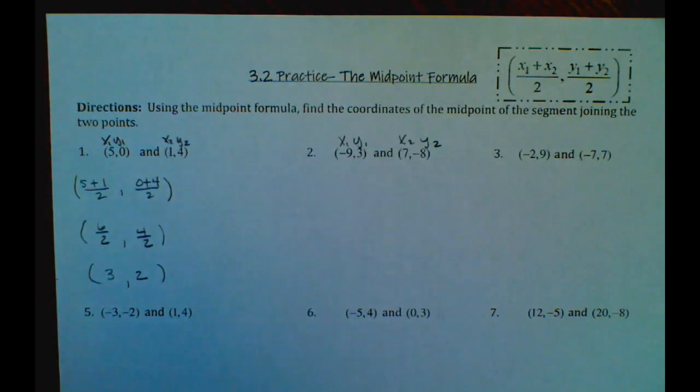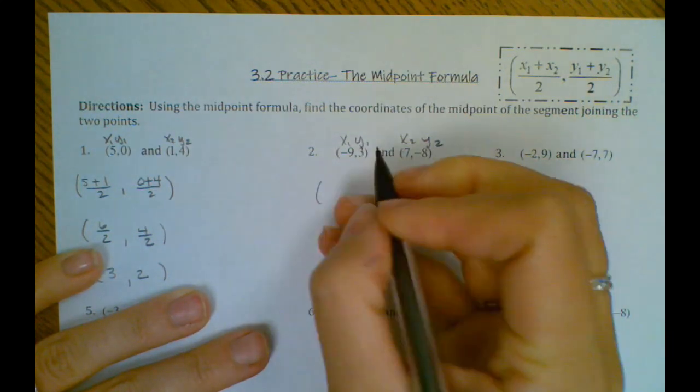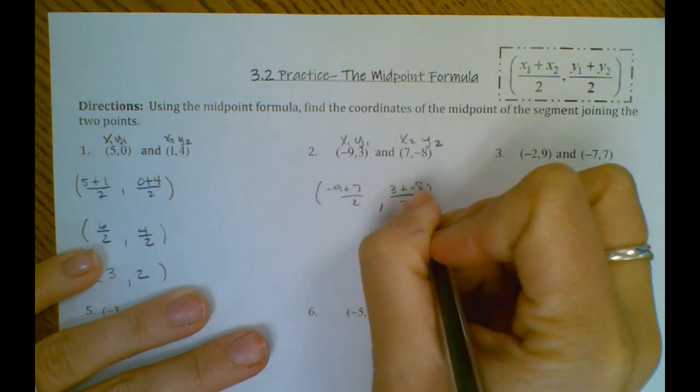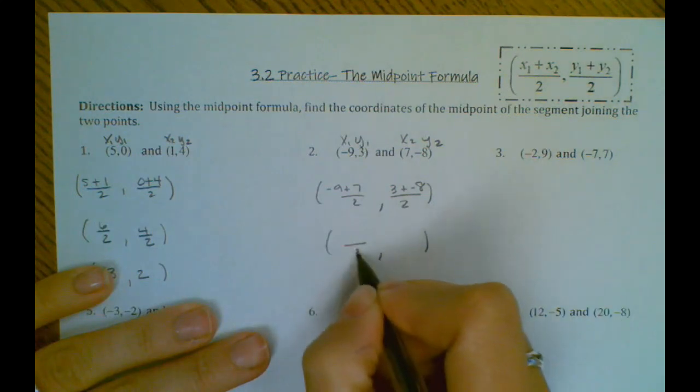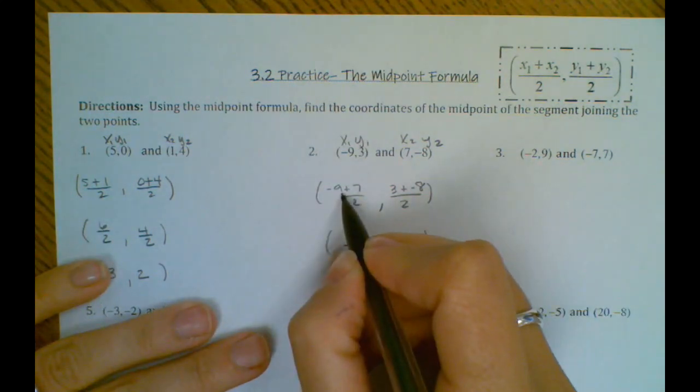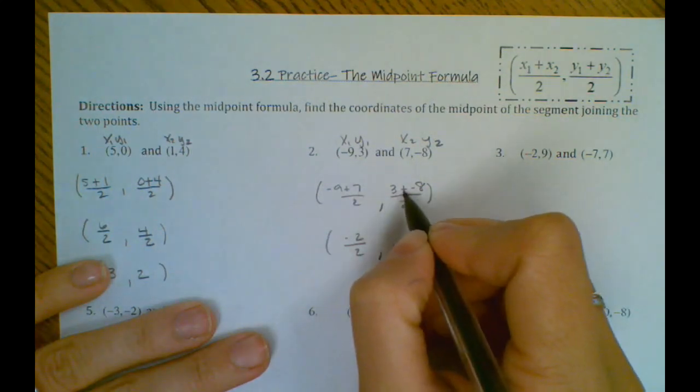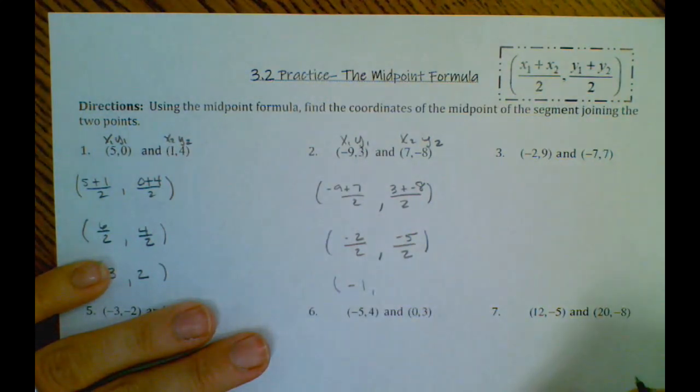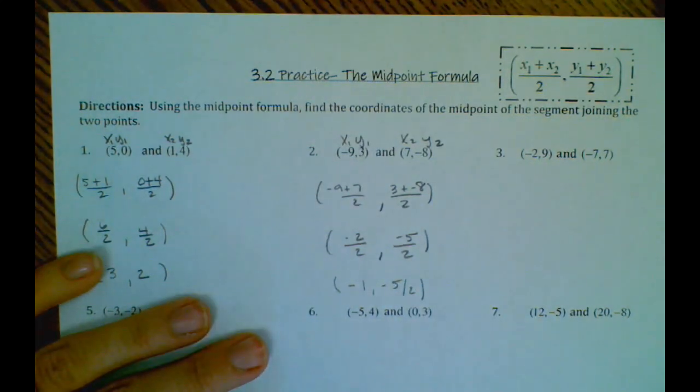We'll go ahead and label number 2. And then we'll fill in our midpoint formula. So here, negative 9 plus 7 is negative 2. 3 minus 8 is negative 5. Negative 2 over 2 is negative 1. Negative 5 over 2 we would leave as negative 5 over 2. That cannot reduce.